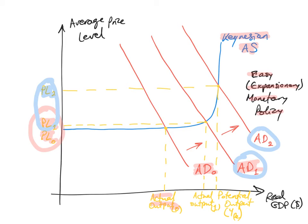According to Keynesians, an expansionary monetary policy will only significantly raise the price level the closer you are to full employment or potential output. If there is a lot of spare capacity and a big recessionary gap, an increase in aggregate demand might not raise the price level that much. Neoclassicals, by contrast, believe that any expansionary demand-side policy — whether monetary or fiscal — will always cause a rise in the average price level. Keynesians disagree, arguing that price level rises only occur as the economy approaches its potential output.